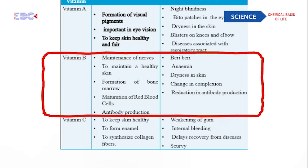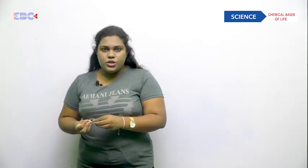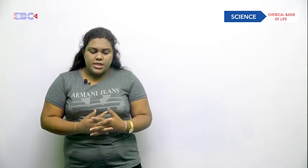The deficiency syndromes of vitamin B are: beriberi, which can cause heart failure as seen in the image; anemia, which is caused by a lack of red blood cells or hemoglobin; dryness of the skin; change in complexion; and reduction of antibody production. Antibodies are important to fight against foreign microorganisms, and vitamin B deficiency reduces their production in our body.